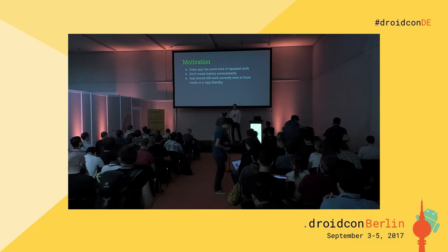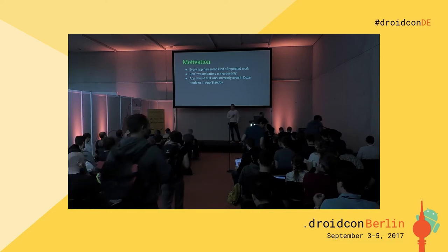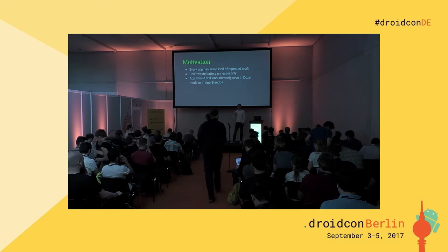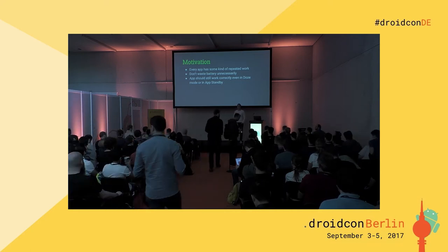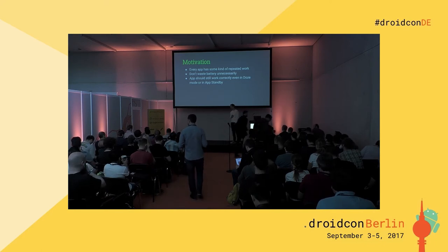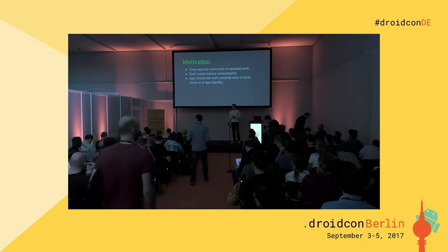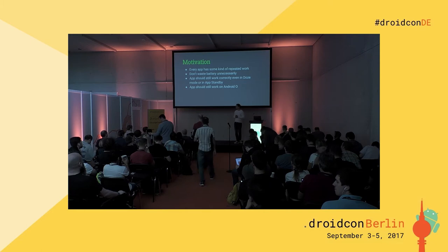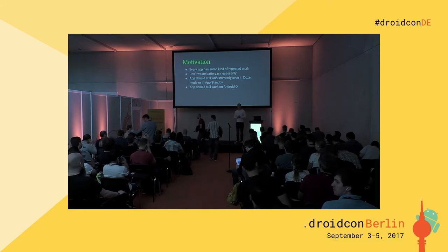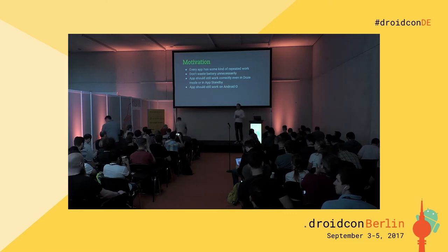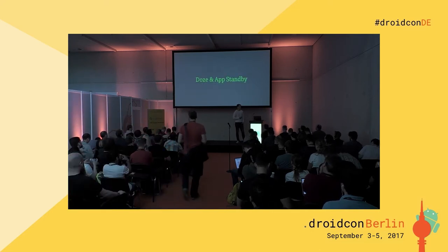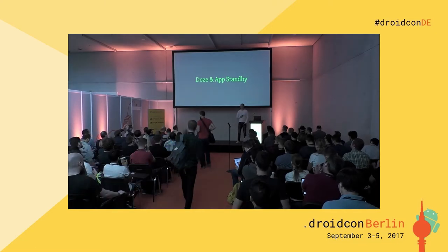Google was also aware of this problem. That's why they introduced with Android Marshmallow two new power saving modes called Doze and App Standby. Doze also had implications for our apps, and we need to be aware of those power saving modes and implement our apps properly. Then a few weeks ago Android O was released, which is even more strict. Making your app ready for Android O required doing some cleanup and changes. But let's go back in time and start with Doze and App Standby.